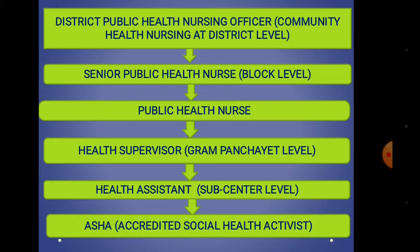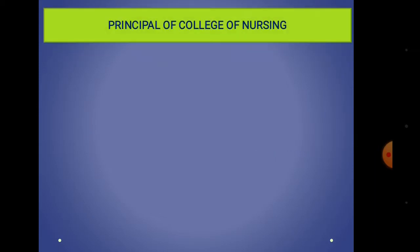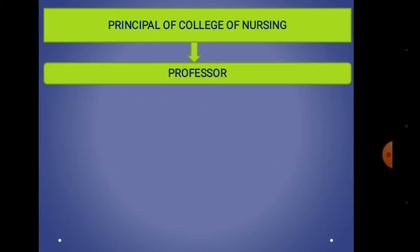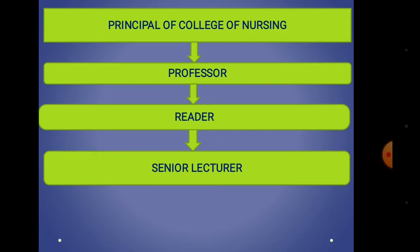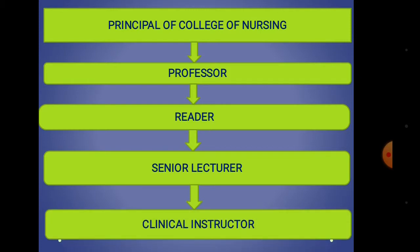Now, in the College of Nursing, at the top of the hierarchy there is the Principal of College of Nursing. The next position is Professor, then Reader, then Senior Lecturer, and at the base level there is Clinical Instructor. Thank you.